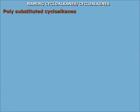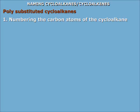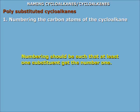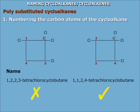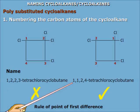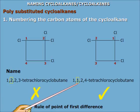Polysubstituted cycloalkanes: when there is more than one substituent, two things are to be done. First, number the carbon atoms of the cycloalkane such that at least one substituent gets the number 1. Numbering may be done clockwise or counterclockwise, following the rule of point of first difference. This numbering arrangement is taken because the second number is lowest in this case.